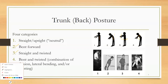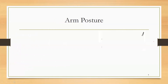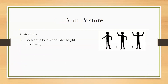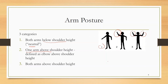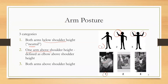Here are the back posture examples: neutral posture scores 1, forward bending scores 2, twisting scores 3, and bending plus twisting scores 4. For arm posture, there are three scores. The neutral posture is defined as both arms below shoulder height, scoring 1. If one arm is above shoulder height, the score is 2. If both arms are above shoulder height, the score is 3.